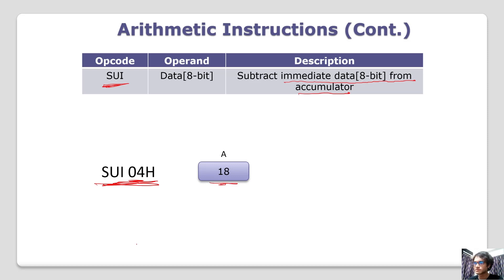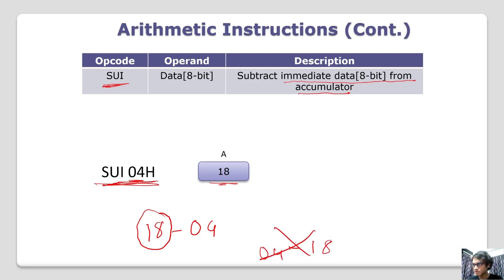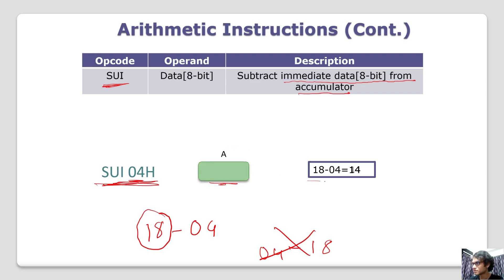This is 18 minus 0. So this is 18 minus 0. The result of the accumulator is saved.